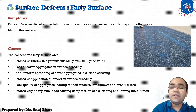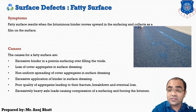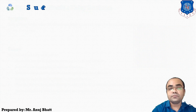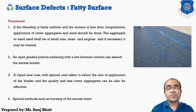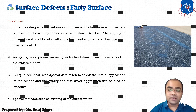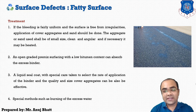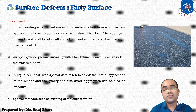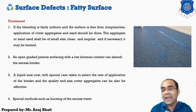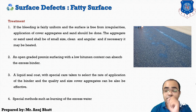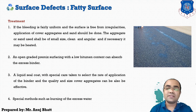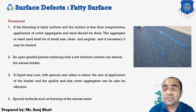Now, how can we treat the fatty surface? For treatment: the first step, if the bleeding is fairly uniform and the surface is free from irregularities, we can apply a cover of aggregates and sand on that particular surface. The aggregate or sand should be small in size, clean, and angular. When applying it on such a surface, it may be heated if found necessary. The second option is an open-graded premix surfacing.